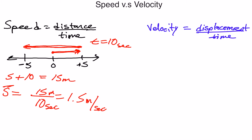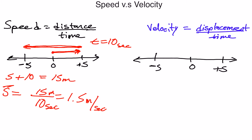Now let's look at velocity using the same number line with zero, positive five, and negative five. Velocity is a vector because it has a magnitude and a direction, so it can be positive or negative. That's because displacement can be positive or negative. Unlike distance, which is the total amount traveled regardless of direction, displacement is how far away you are from your point of origin.